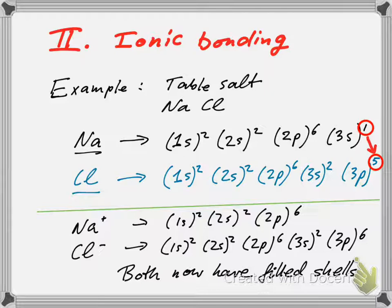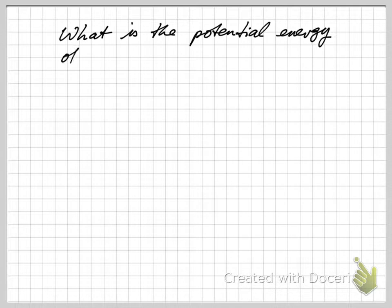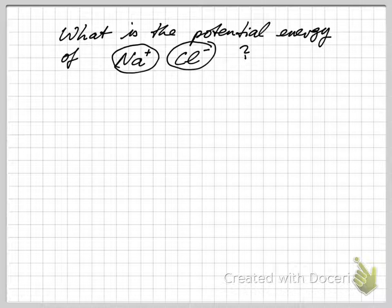That positive ion would have a completely filled shell, and the chlorine would also have a now completely filled third shell. Both have filled shells and both ions are quote-unquote happy with that. So the question then is what would be the potential energy of this configuration.